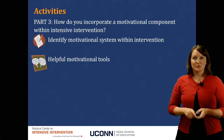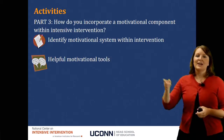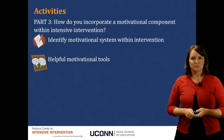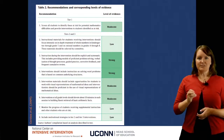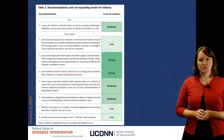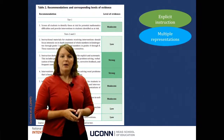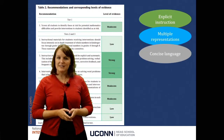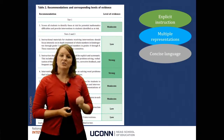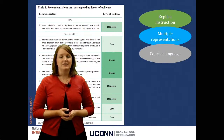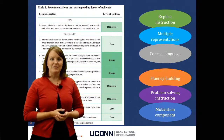And then finally, in part three, you're going to think about different motivational systems that are used within intervention, and then you're going to share some helpful motivational tools. As we've been working through this entire course, we've been thinking about what effective instruction looks like for students with learning difficulties. The six components we're focusing on are using explicit instruction, the use of multiple representations, and strong concise language — all covered in module four. In this module, we're focusing on strategies that should be embedded within intensive intervention, including fluency building, problem-solving instruction, and a motivational component.